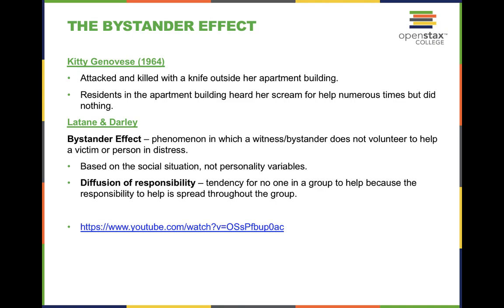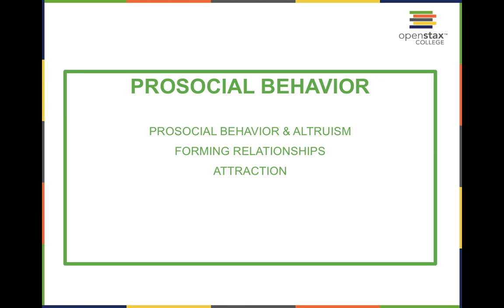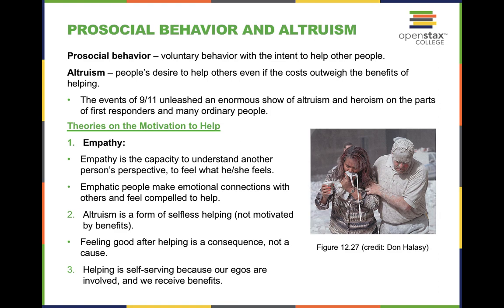Pro-social behavior is voluntary behavior with the intent to help other people. Altruism is people's desire to help others even if the costs outweigh the benefits — helping purely for the good of it, not expecting anything in return. This is driven by empathy, the ability to take the perspective of others and put yourself in their shoes. Sympathy is feeling sorry for someone; empathy is actually understanding what they feel.